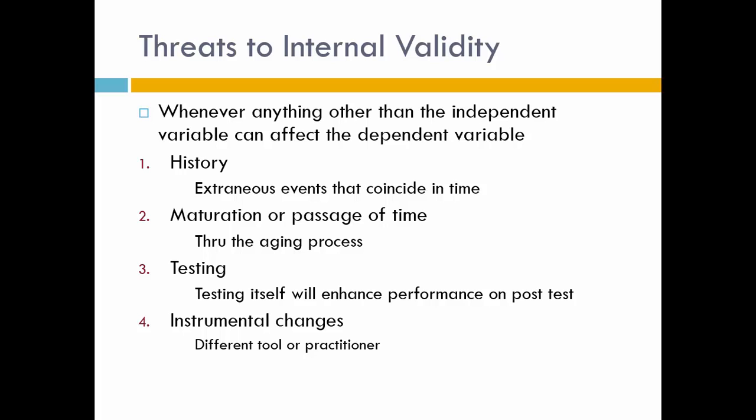Testing is the third threat — sometimes the act of testing itself affects the results. Just by taking a test twice, I might do better the second time, and it isn't necessarily the variable we're studying that caused it. Instrumental changes is the fourth threat: whatever instrument you use in the pre-test, you want to use in the post-test. Sometimes tests change though and we can't use the same one, and if that happens it's a threat to internal validity that needs to be acknowledged.